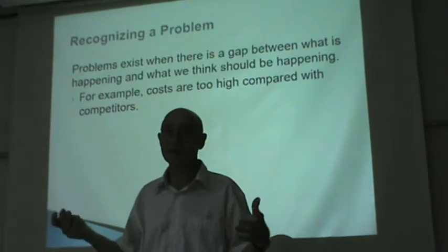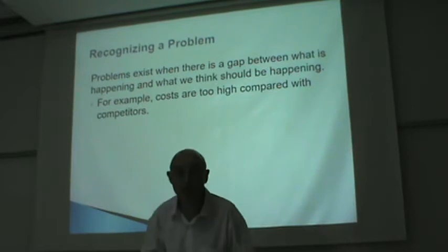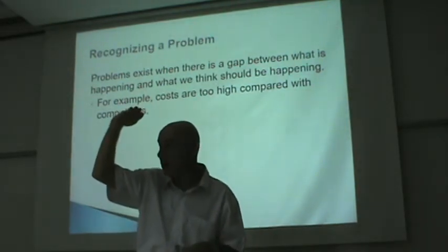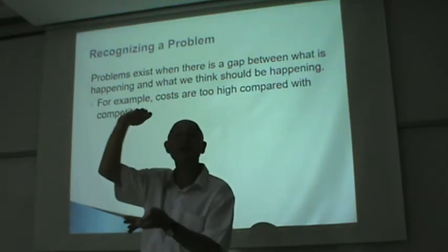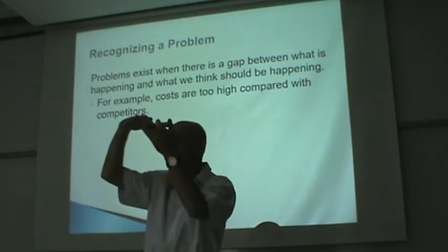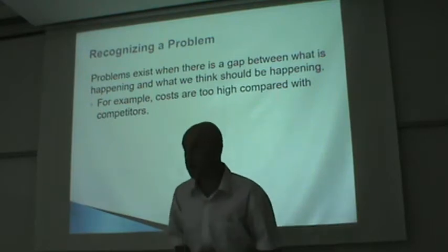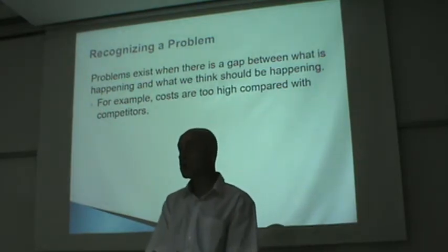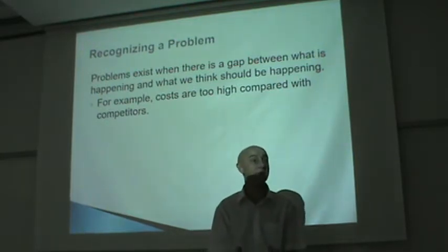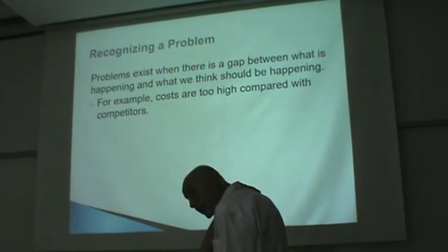What is a problem? A problem is when you have a certain desired state or goal, and reality is very different from that desired state. For example, somebody may have a big belly — the desired state is slim but the reality is not. Or your back might be slouched when you want it straight up.